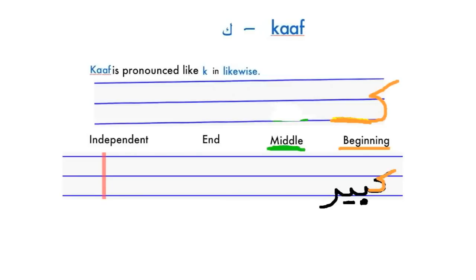In the middle form, we start with a straight line, then connect it in a C form, then go down and make a straight line and write the next letter, which gets connected to Kaf. At the end, we draw a straight line on top of the C. An example would be the word 'Sukkar,' which means sweet or sugar.